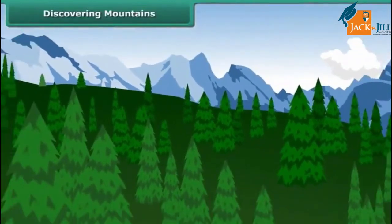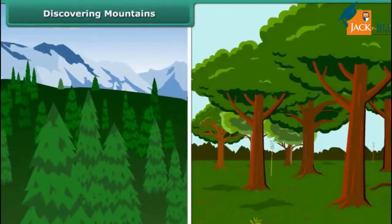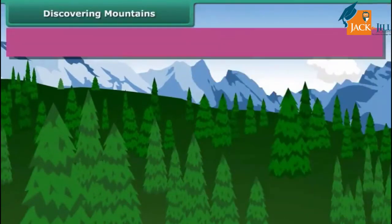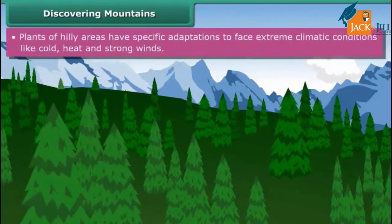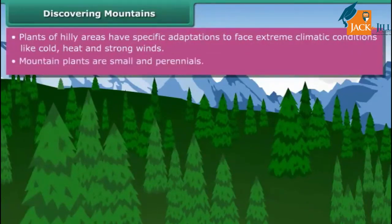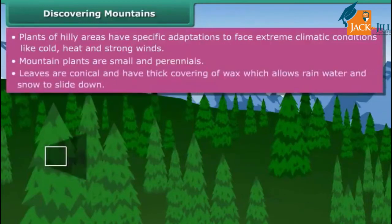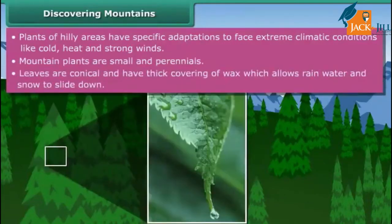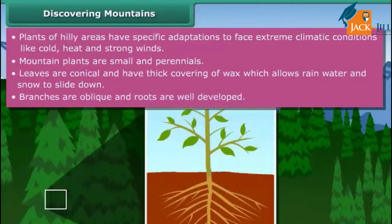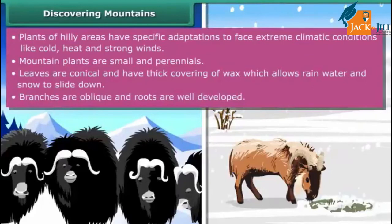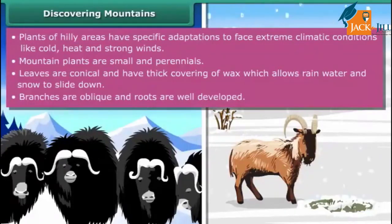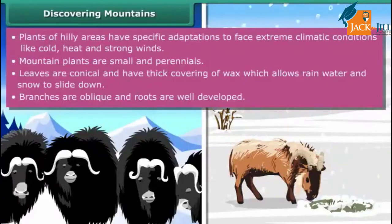Have you ever thought why trees growing in hilly regions are different from trees growing in grasslands or forest regions? Plants of hilly areas have specific adaptations to face extreme climatic conditions like cold and strong winds. Plants are small and perennial, leaves are conical and have a thick covering of wax which allows rainwater and snow to slide down. Their branches are oblique and roots are well developed.